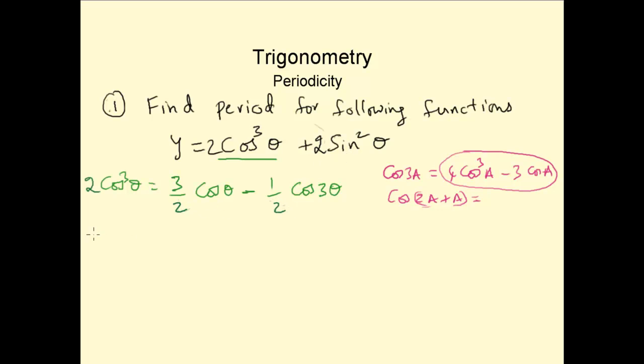Now 2 sin squared theta. What is 2 sin squared theta in terms of either cos or sin single powers? We know that cos 2 theta is 1 minus 2 sin squared theta. So 2 sin squared theta is 1 minus cos 2 theta.